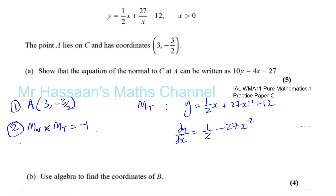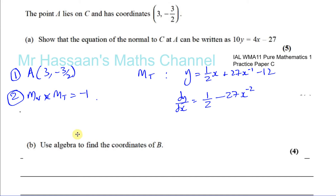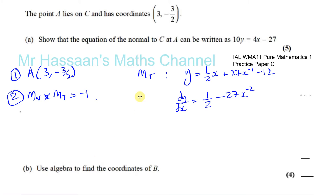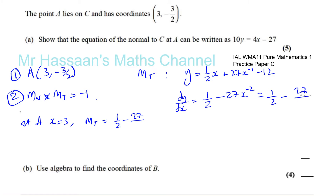At point A, x equals 3, so we substitute into the gradient function. We get the gradient of the tangent equals one-half minus 27 over x squared, which is one-half minus 27 over 9. That gives one-half minus 3, which equals minus 5/2.